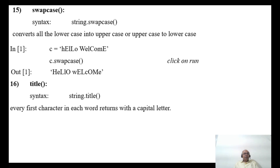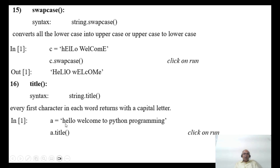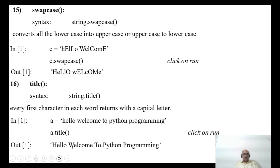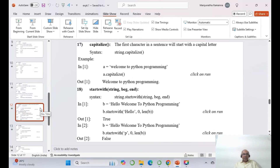The title function makes every first character of each word a capital letter. For example, if a = 'hello welcome to python programming' and you call a.title(), the output will be 'Hello Welcome To Python Programming', with each word starting with a capital letter.